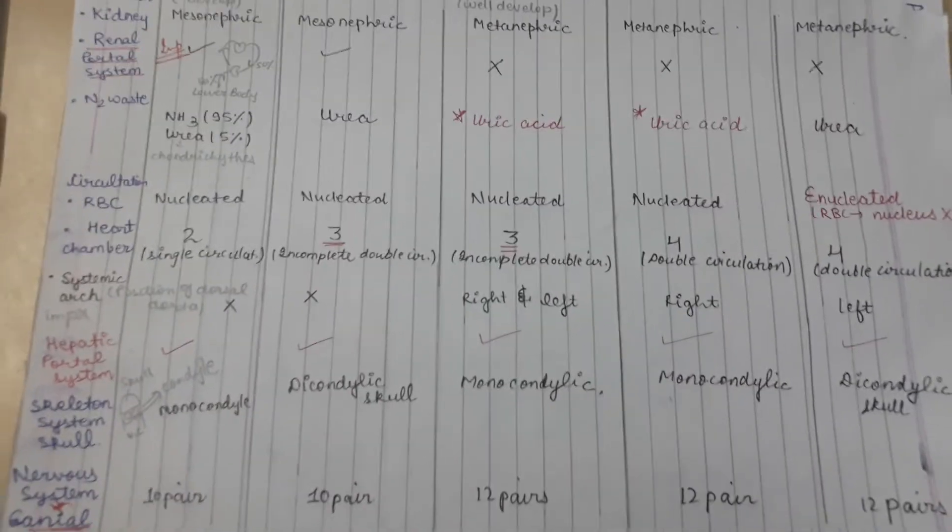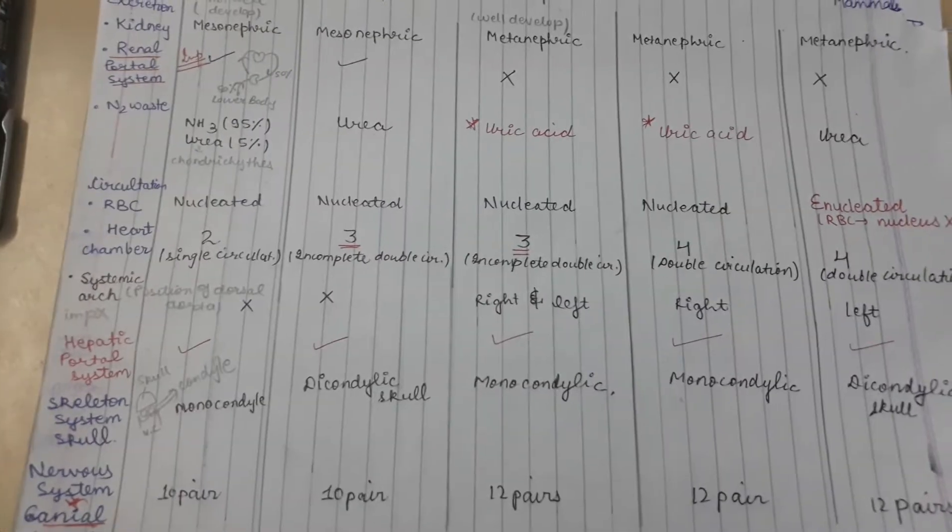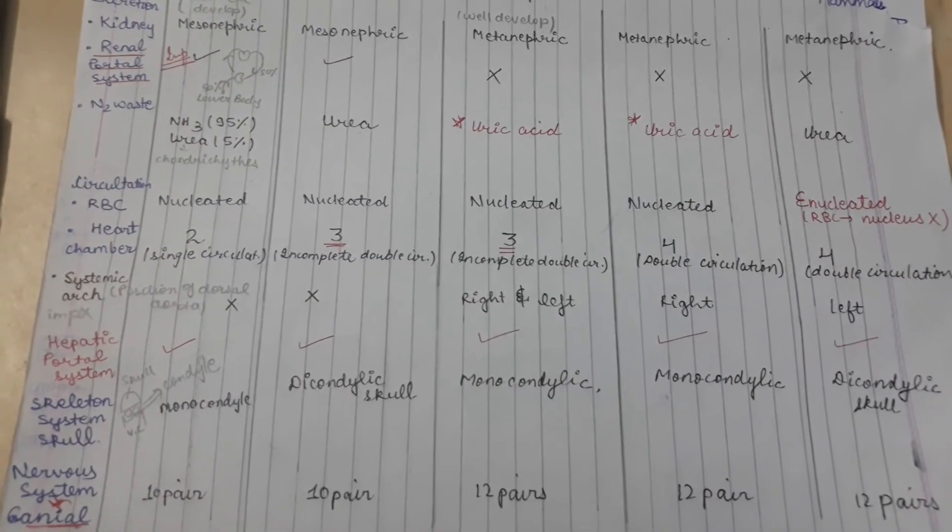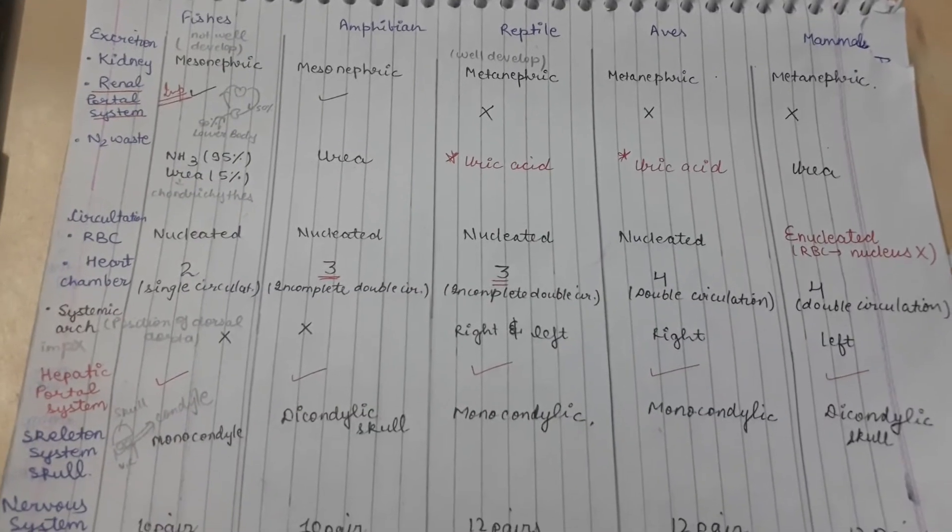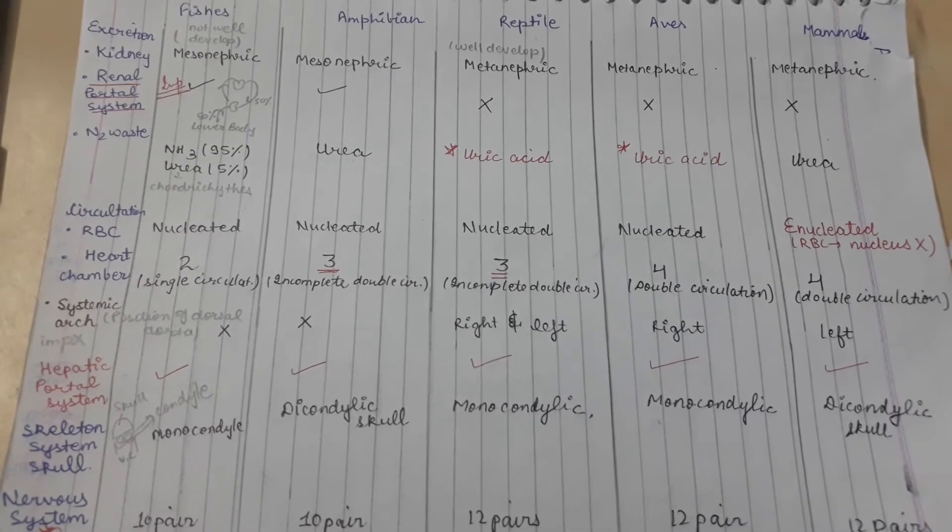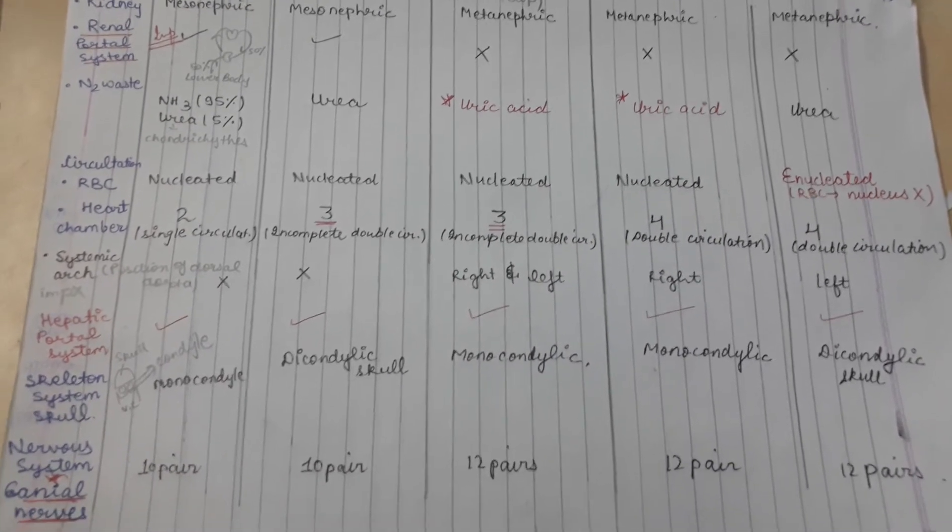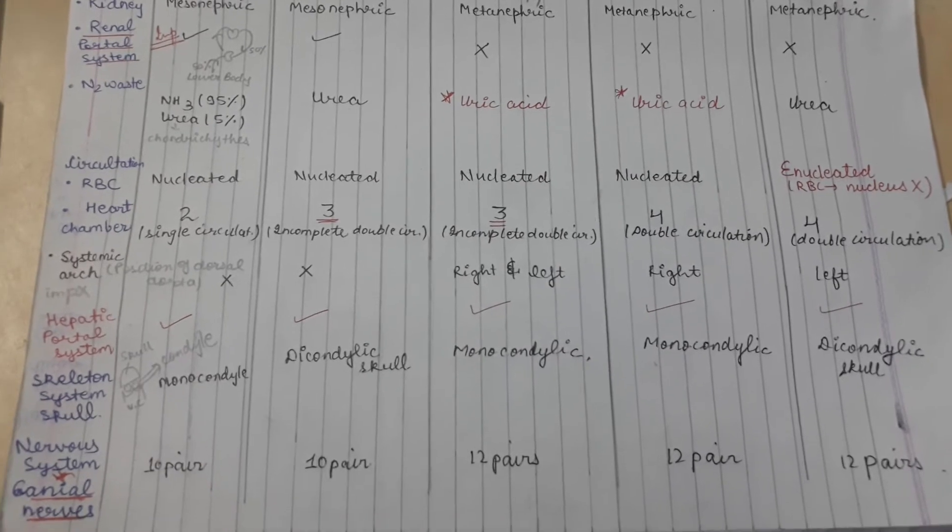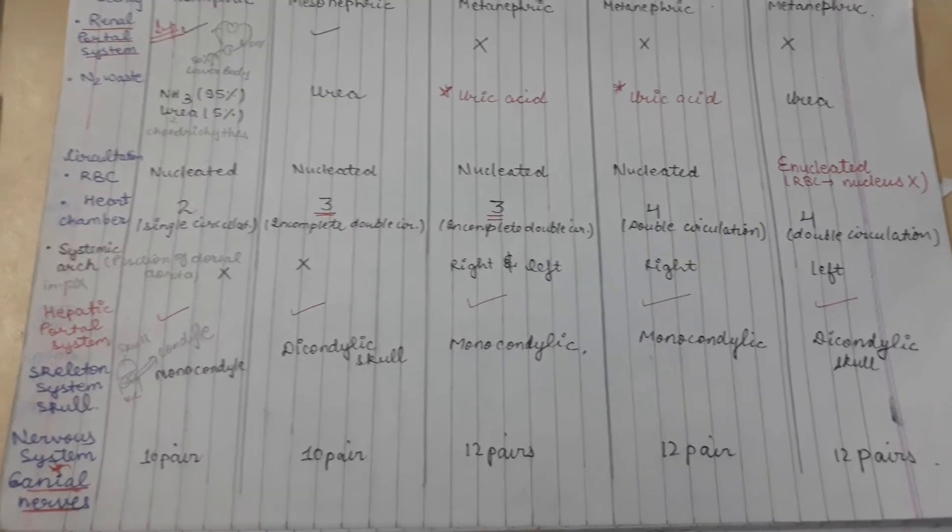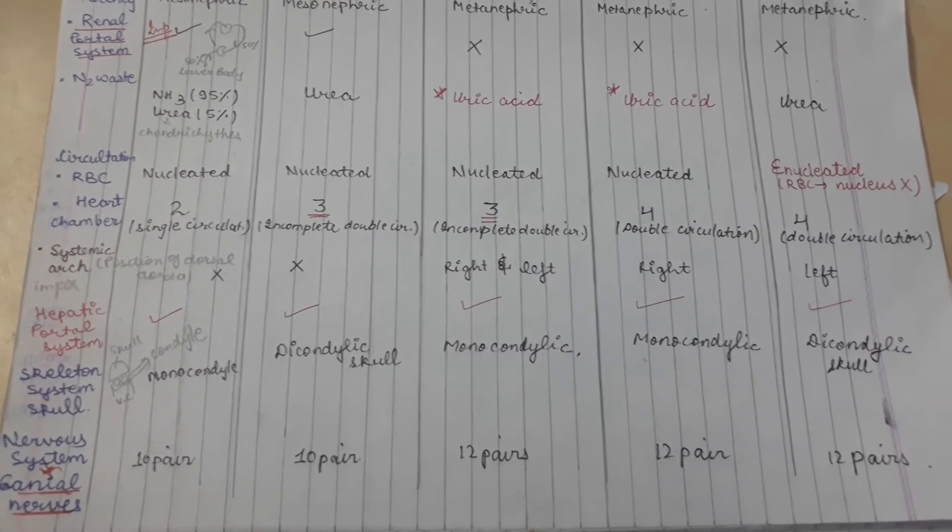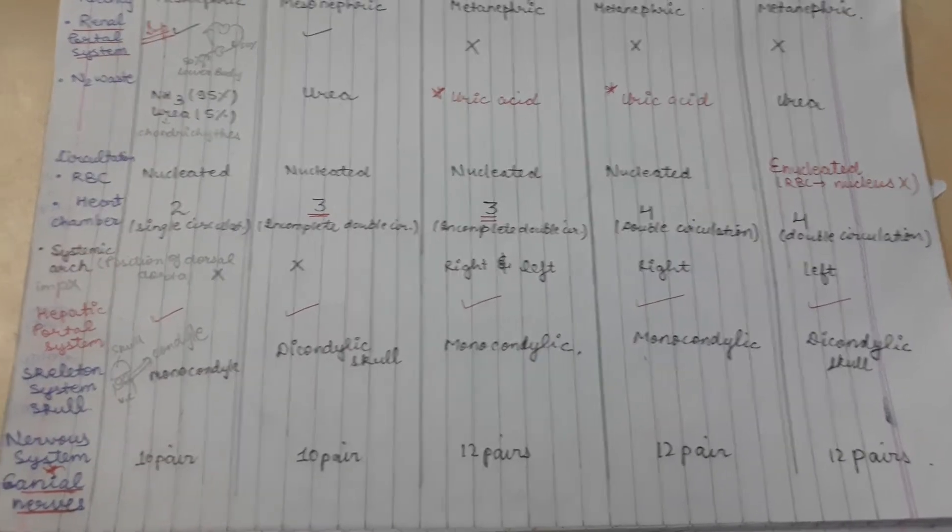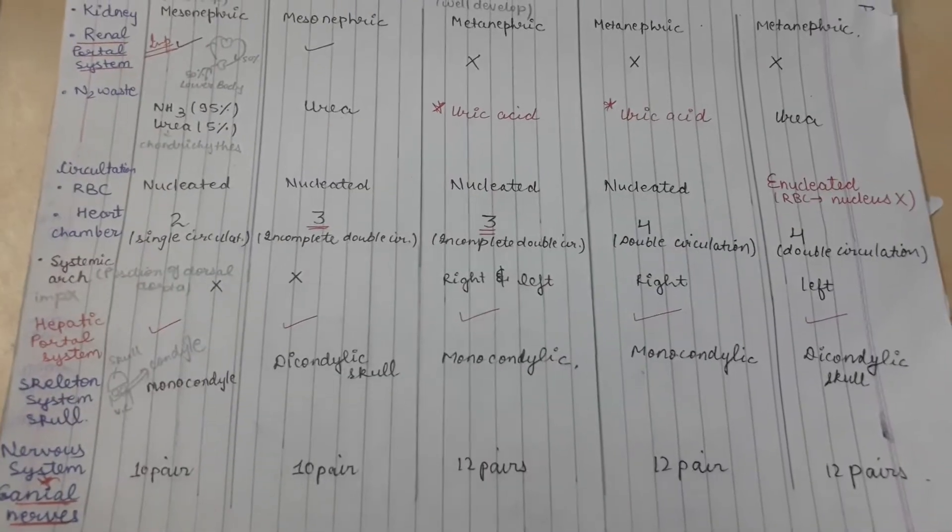Hepatic portal system: hepatic refers to liver, and it's present in all vertebrates - fishes, amphibians, reptiles, aves, and mammals. Skeletal system: the skull base has condyles which attach with the first vertebra known as atlas. In amphibians and mammals we have a dicondylic skull, rest have monocondylic.